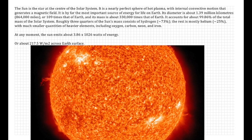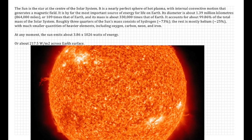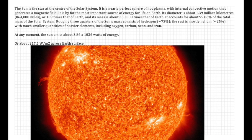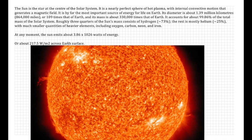At any moment in time, the Sun puts about 217.5 watts per square meter across the entire Earth's surface when it's facing the Sun.